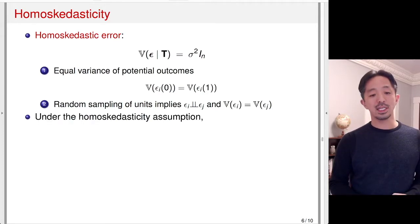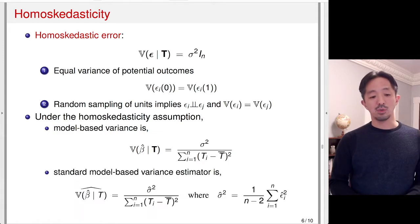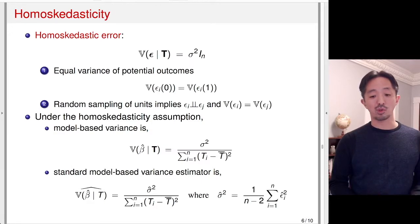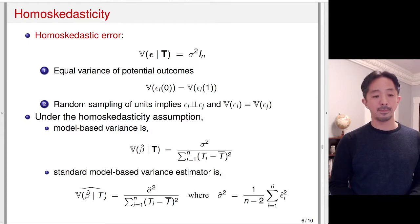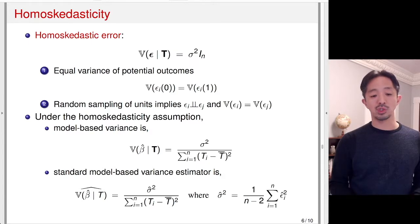Under the homoskedasticity assumption, the model-based variance can be written in a standard form. We estimate it by estimating the numerator sigma squared as the sum of squared residuals epsilon-hat squared, divided by n minus 2 to account for the loss of degrees of freedom from the two parameters alpha and beta. The interesting question is how this variance estimator for beta-hat relates to the randomization variance derived using Neyman's method.